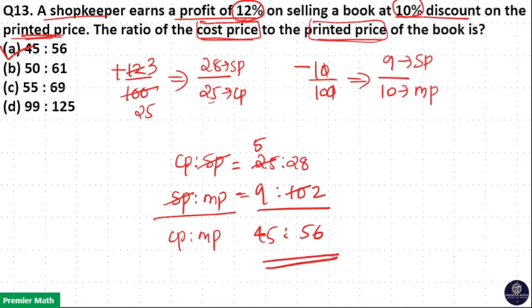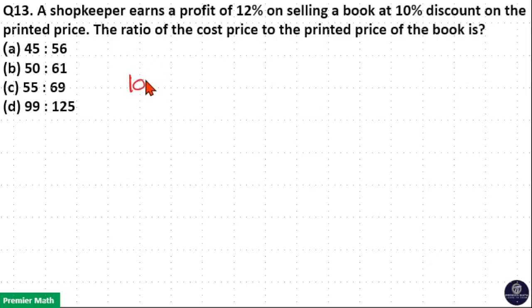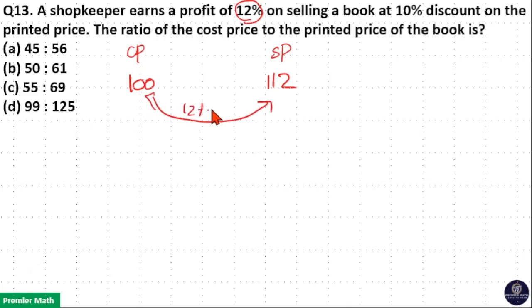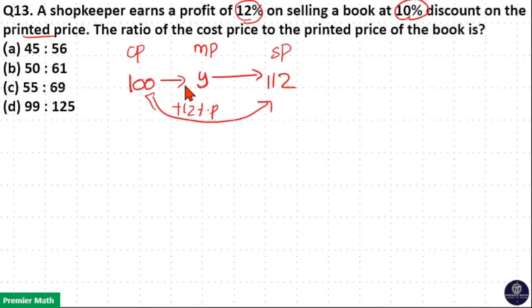Now if you want to do this question a different way: consider cost price as 100 rupees, then selling price must be 112 rupees because there is a profit of 12%. Now there is a 10% discount on the printed price, so consider mark price as Y.